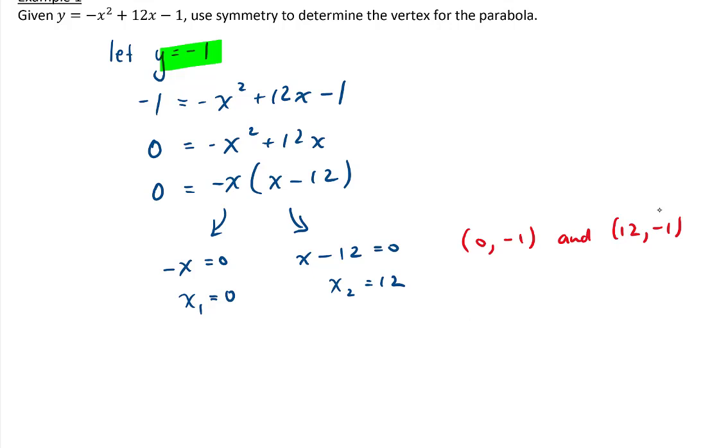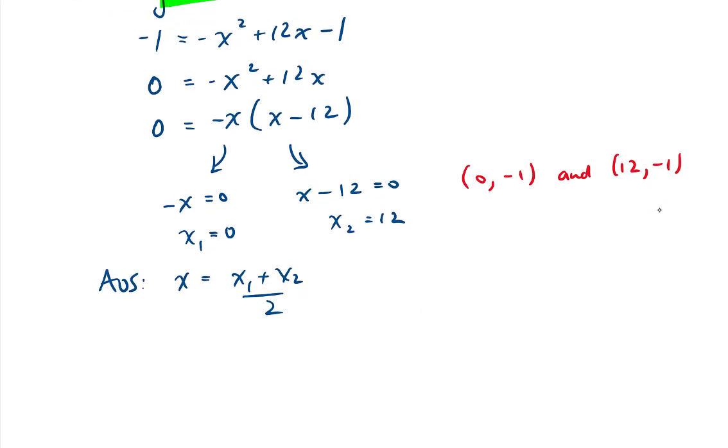Now we can find the axis of symmetry. Subbing in our two roots, we get 0 plus 12 divided by 2, which tells us we have an axis of symmetry at x equals 6.